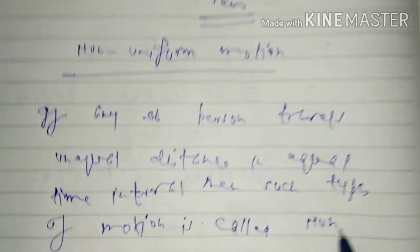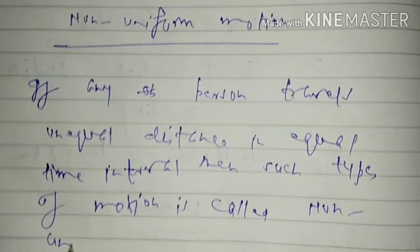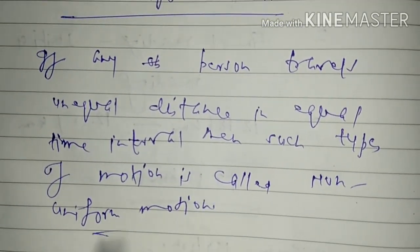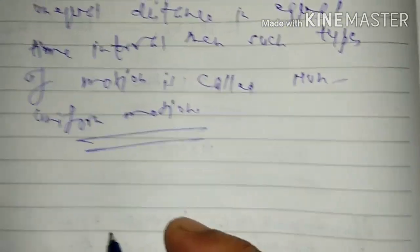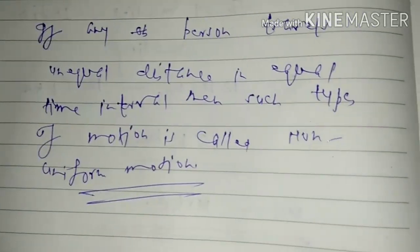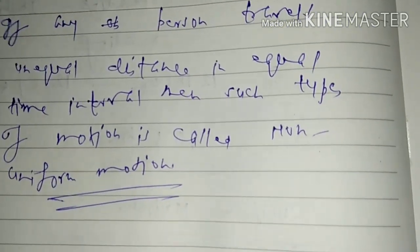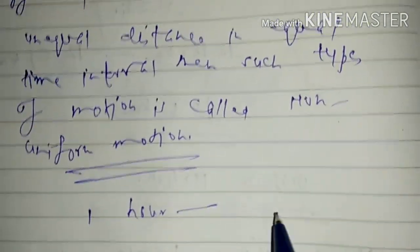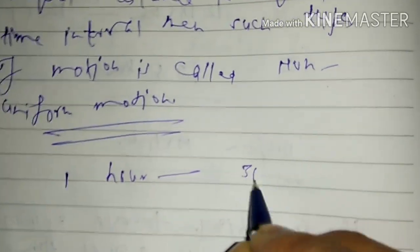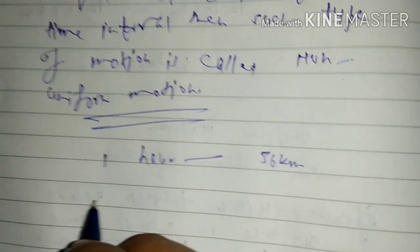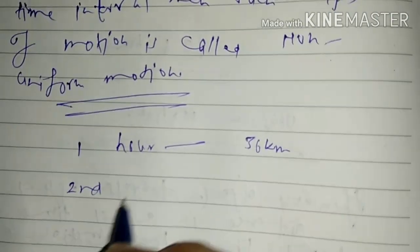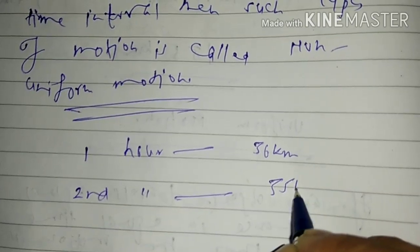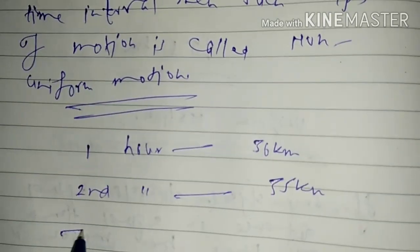For example, suppose we start our journey from any particular point, and in first hour our vehicle travels 30 kilometers distance. Again, in second hour it travels 35 kilometers distance. In third hour it travels 40 kilometers distance.